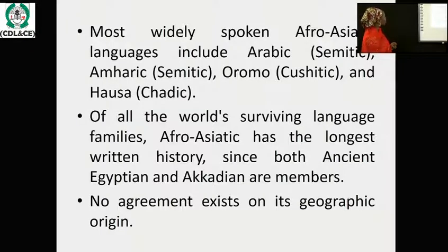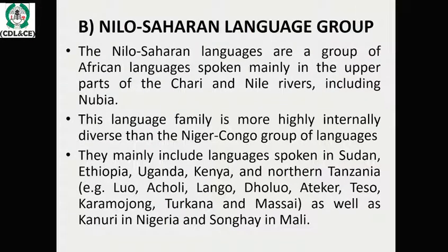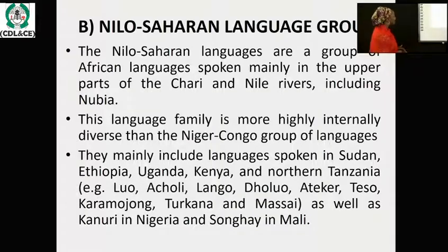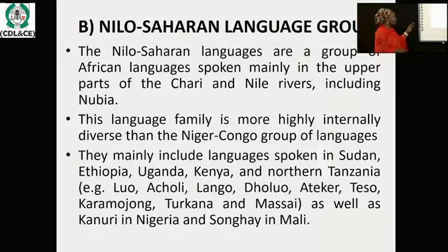Now let's look at the second one, the Nilo-Saharan language group. The Nilo-Saharan languages are a group of African languages spoken mainly in the upper part of the Chari and Nile River, which is presently known as Nubia. This language family is more and highly internally diverse than the Niger-Congo. The countries that mainly speak it include Sudan, Ethiopia, Uganda, Kenya, and Northern Tanzania.